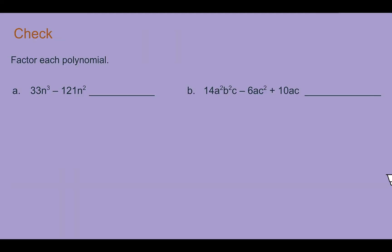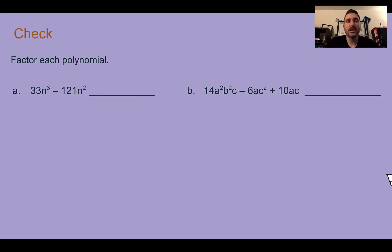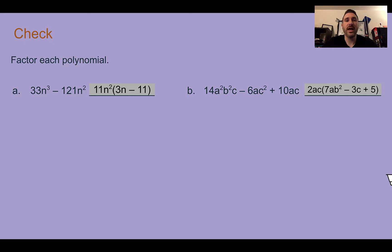Check your understanding — factor each polynomial. For the first one, it has a greatest common factor of 11n squared, and when you divide that out, you're left with 3n minus 11. For the second one, it has a greatest common factor of 2ac, and when you take that out, you're left with 7ab squared minus 3c plus 5.